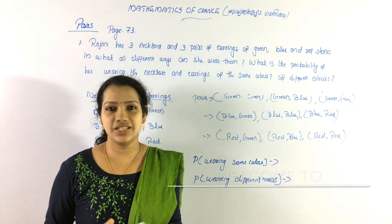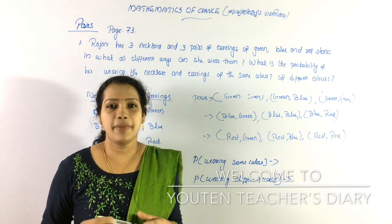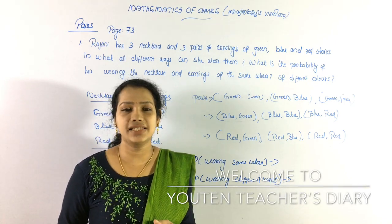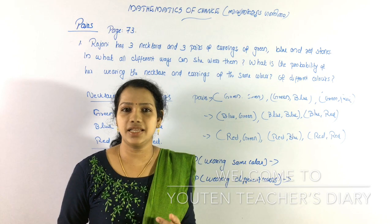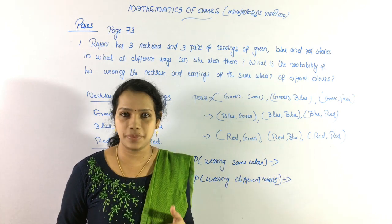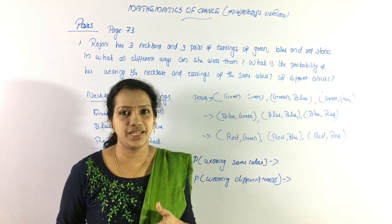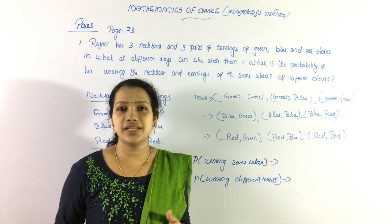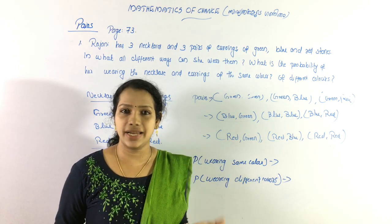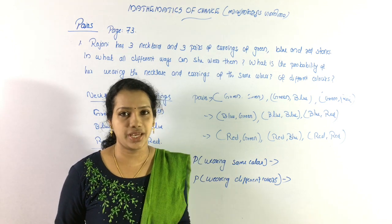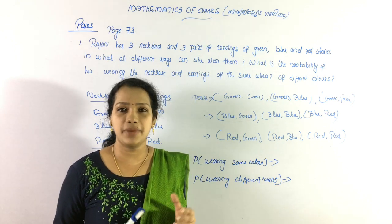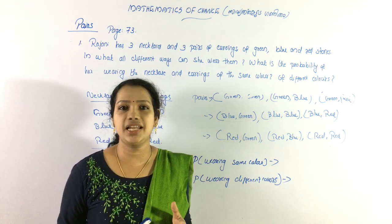Welcome back to Teacher's Diary. We are going to learn 3 chapters of Mathematics of Chance. In this video, we are going to talk about the Pairs and Wellness section, page number 73.